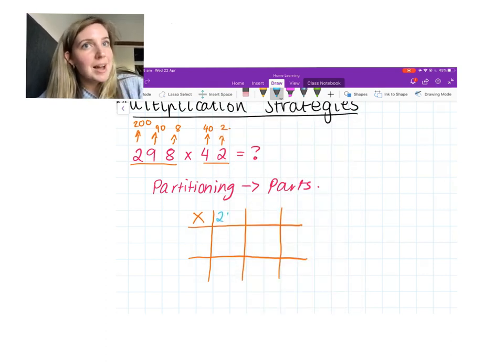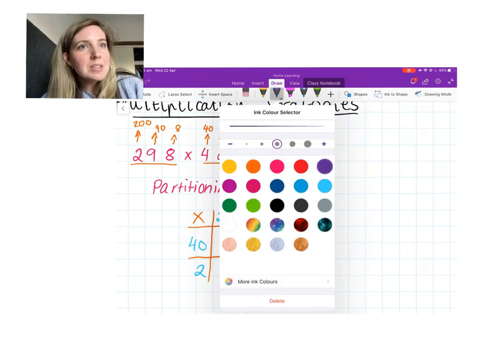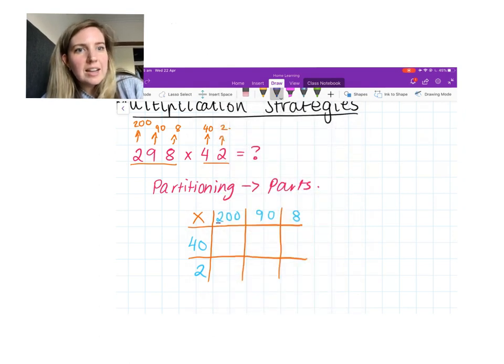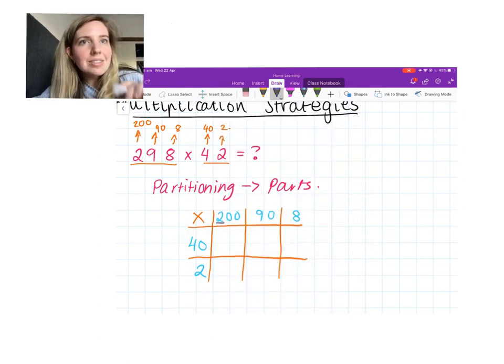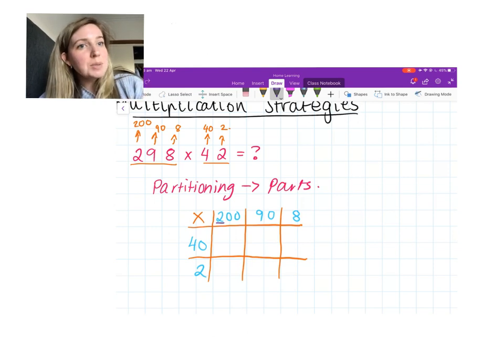My number is 298, so this is where I write down those numbers in the partitioned form: 200, then 90, then 8. On the side I'm going to have 40 and 2. I'm just going to pause it for a second so we can catch up. Now this is how I want you to organize large sums with this partitioning strategy.